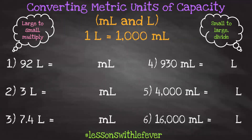Number one: 92 liters is equivalent to how many milliliters? I'm going from a larger unit to a smaller unit, so I need to multiply. We will be multiplying and dividing by 1,000 for all of these problems. So 92 times 1,000 is equivalent to 92,000 milliliters.